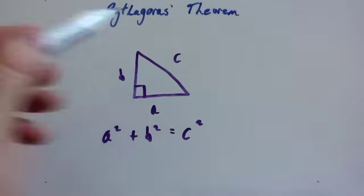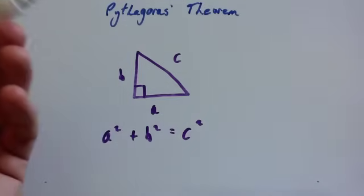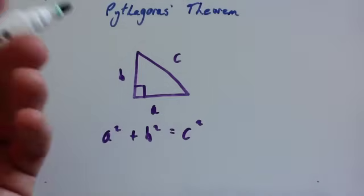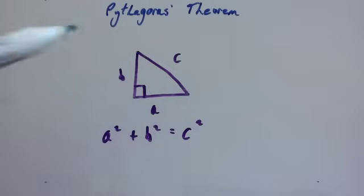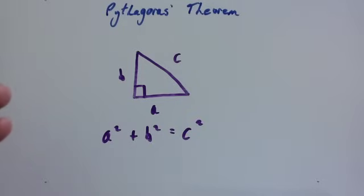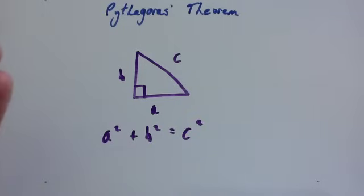I'm going to look at Pythagoras' theorem. Pythagoras' theorem is for right-angled triangles, like the one I've drawn here, and is used to work out the length of a missing side. So usually you'll know two sides, and you'll use Pythagoras' theorem to work out the third side of the right-angled triangle.